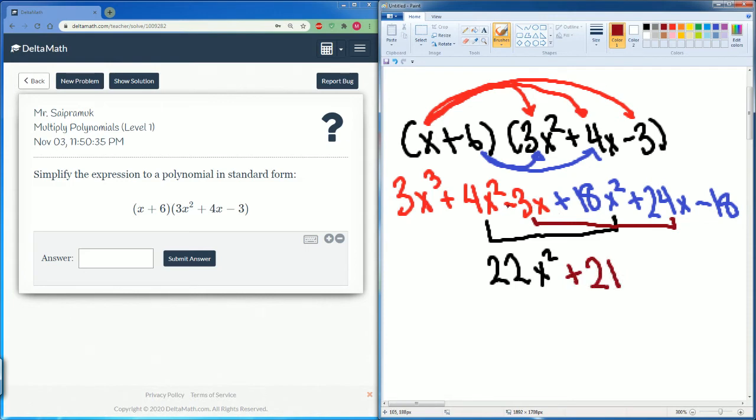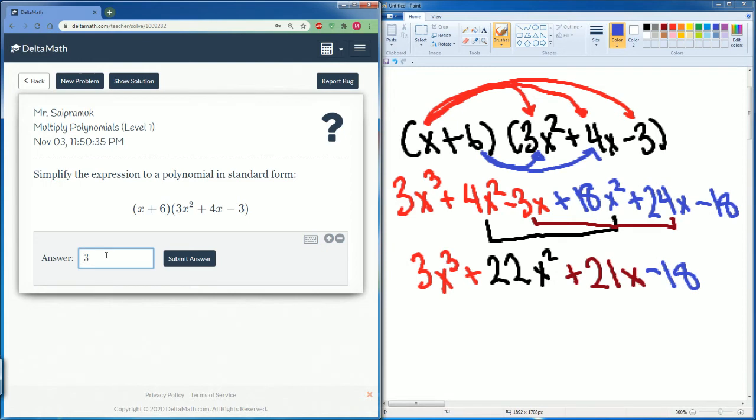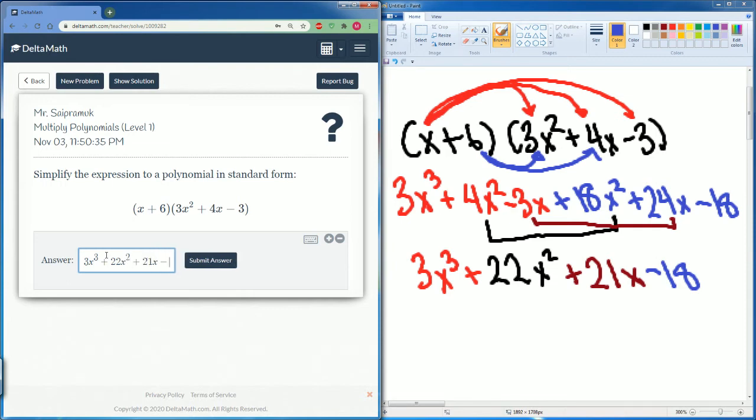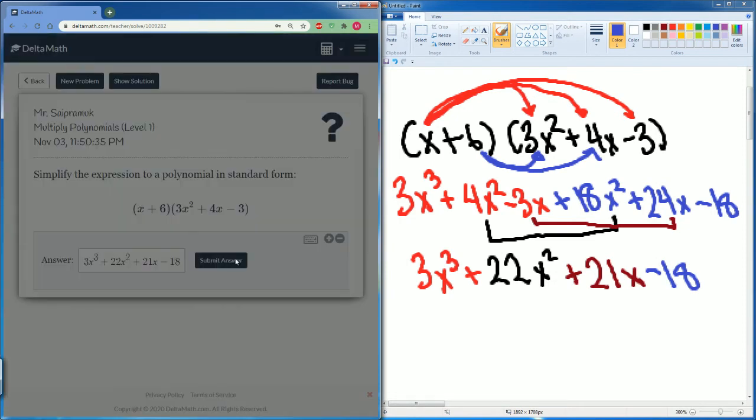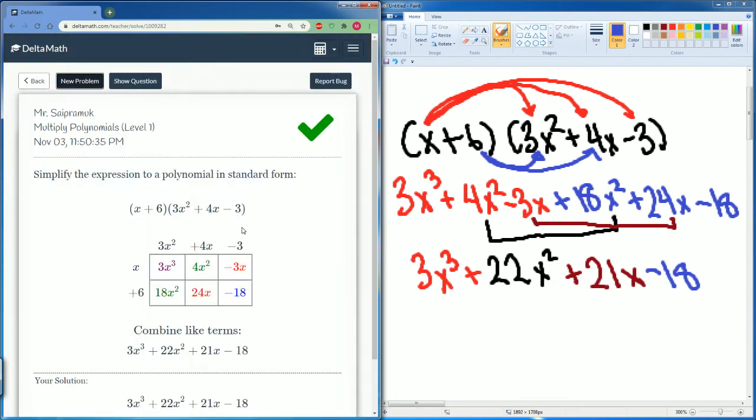And this is negative 3x plus 24x is 21x. Bring everything else down. So it was 3x cubed plus that, then bring down the minus 18. 3x to the power 3 plus 22x to the power 2 plus 21x minus 18. That is correct.